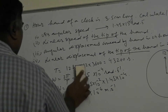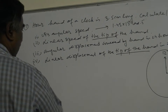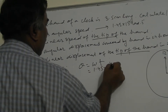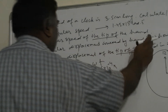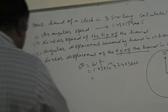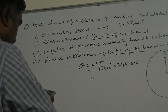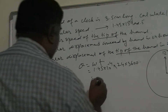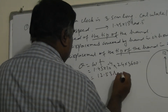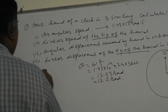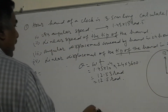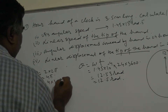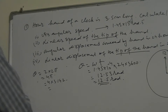Now for angular displacement covered by the hand in 24 hours, the formula is theta equals omega times T. Omega is 1.45 into 10 to the power minus 4, and T is 24 hours, so 24 into 3600 seconds. This gives theta equals 12.5 radians. Alternatively, in 24 hours the hand completes 2 full cycles, so angular displacement equals 2 into 2π, which is 4π radians — approximately the same answer.